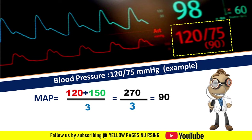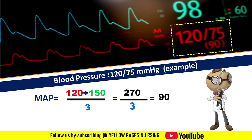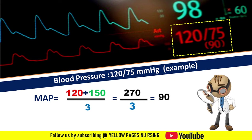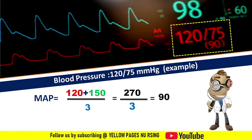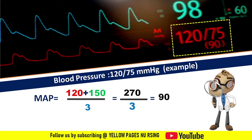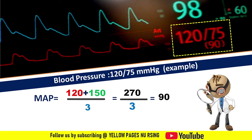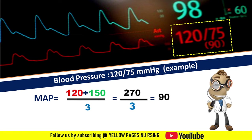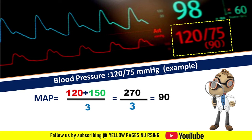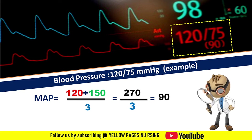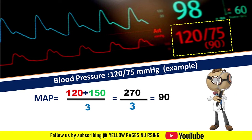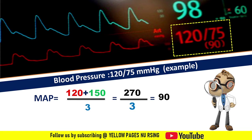When a patient is on invasive blood pressure monitoring, the mean arterial pressure is displayed directly on the monitor. However, in the case of non-invasive monitoring, we may need to calculate the mean arterial pressure using the formula. There is also another formula for calculating MAP.